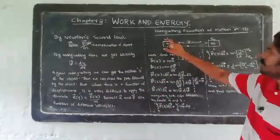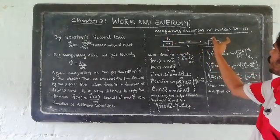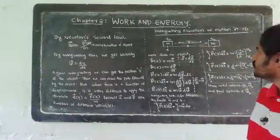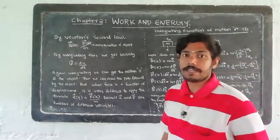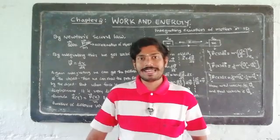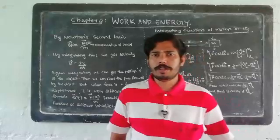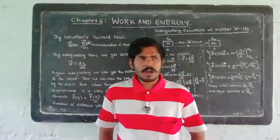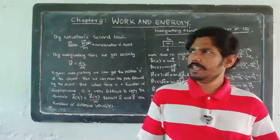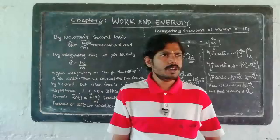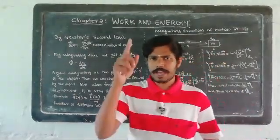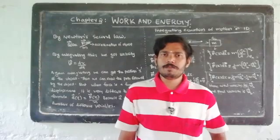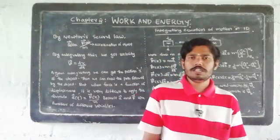This is the topic of integrating the equation of motion in one dimension. One-dimensional motion: we execute an objective associated with the equation of motion and integrate it. Motion in a straight lane — such as along a straight railway track — is one-dimensional motion. A freely falling body is also one-dimensional motion. Motion in a plane is two-dimensional, and motion in space is three-dimensional.